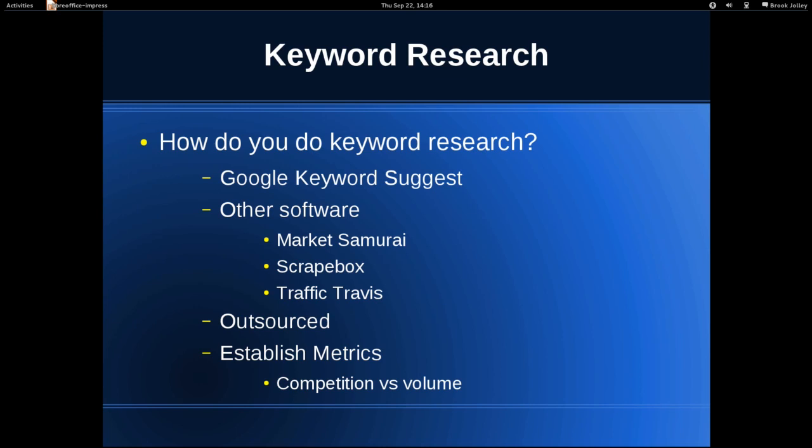Another important thing: you want to establish some sort of metrics to determine whether the keywords you're focusing on are actually valuable. A good way to look at that is if you have a program like Market Samurai or Traffic Travis, or some other method for tracking how many websites target a specific term in specific places programmatically. You can take that information and compare it with the overall competition — how many people target your specific keyword and what the page rank of those sites are — and determine the difficulty of ranking. Try to establish a metric for how difficult a term you're willing to invest time in trying to rank for.